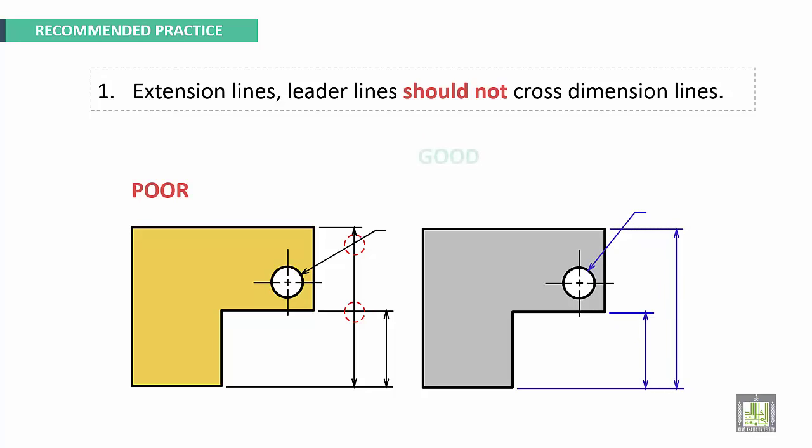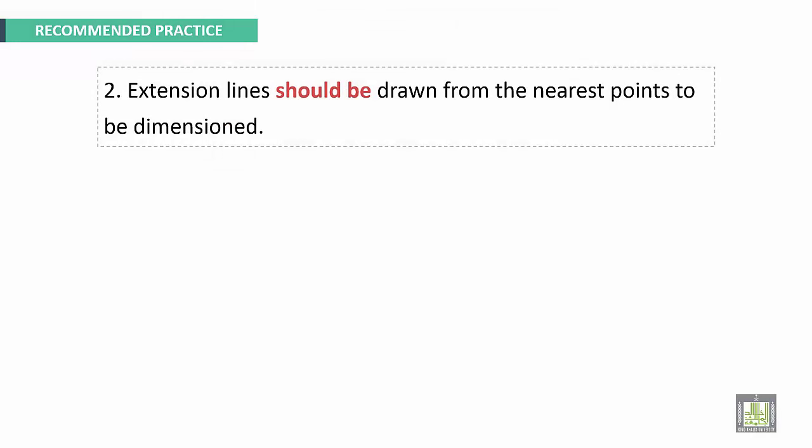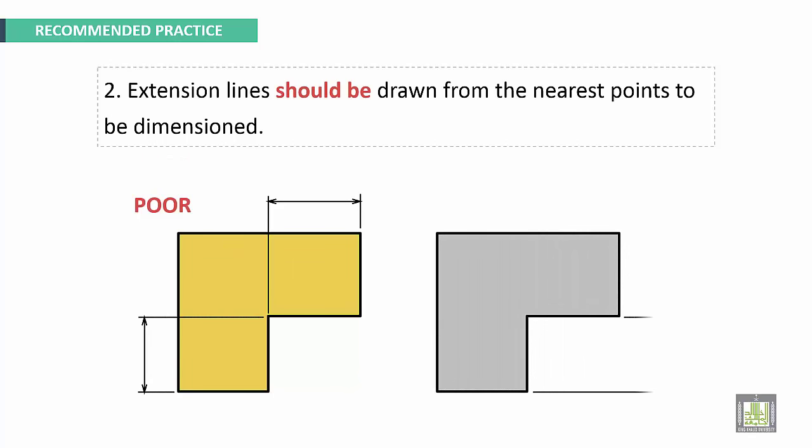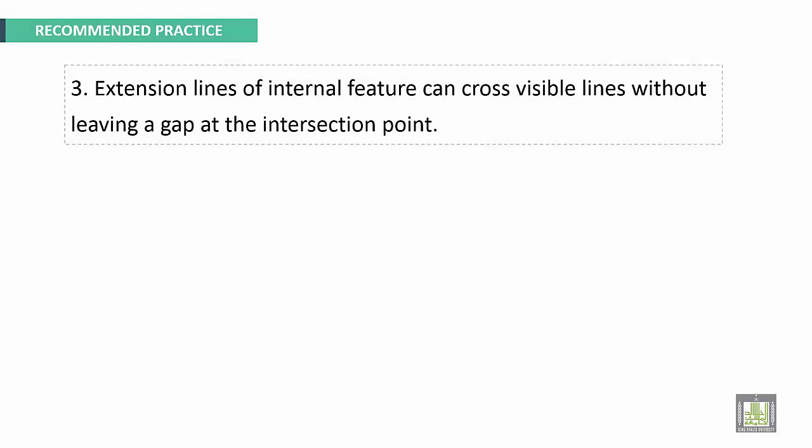Extension lines should be drawn from the nearest points to be dimensioned. For example, this representation is poor. These dimensions should be reversed in sides, here and here. This is good.